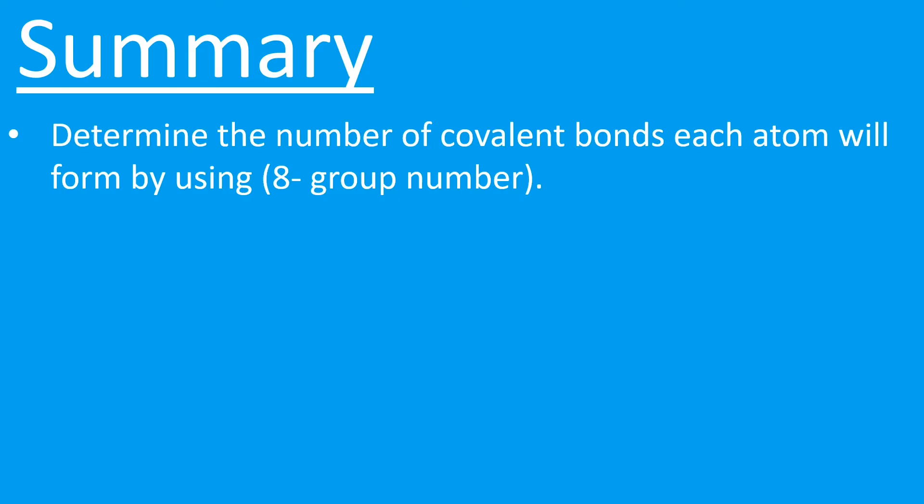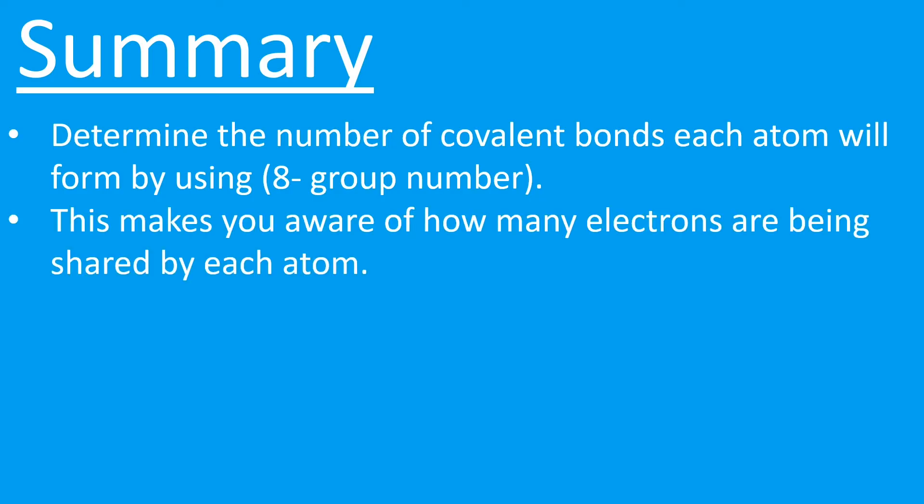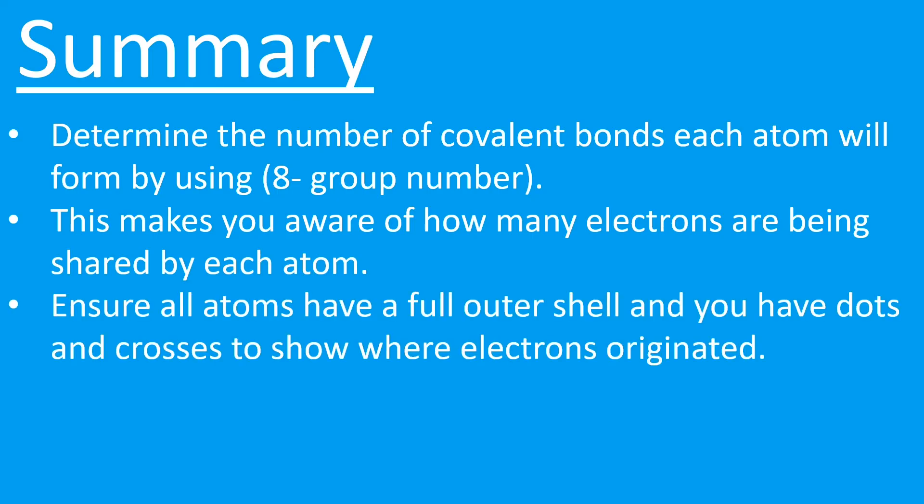Something in group five: 8 minus 5 is 3, it will form three covalent bonds. This makes you aware of how many electrons are being shared. So if it forms three bonds, it has to share three pairs. If it forms two bonds, it has to form or share two pairs.